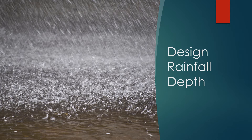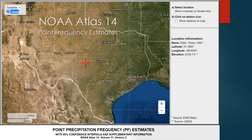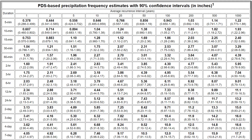To develop a design rainfall depth, the National Weather Service collects rain gauge data from around the country, ensures the quality is correct, and puts it through a statistical analyzer to develop an interactive website called NOAA Atlas 14. This website provides information about point frequency estimates for precipitation. By pointing a cursor at a location in Central Texas, a table pops up with all the information needed to determine rainfall amounts for a given duration and frequency.